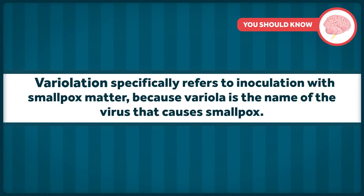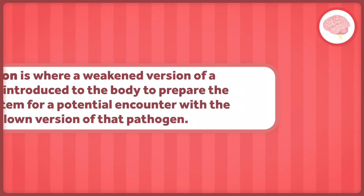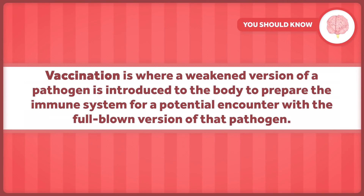Variolation specifically refers to inoculation with smallpox matter, because variola is the name of the virus that causes smallpox. And vaccination, of course, is what we know today, where a weakened version of a pathogen is introduced to the body to prepare the immune system for a potential encounter with the full-blown version of that pathogen later. It turns out that this is much safer than inoculation, though inoculation was safer than natural exposure. It's all about progress.